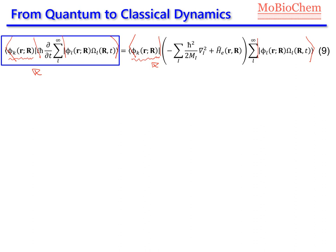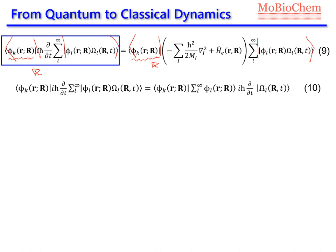Let's analyze the left-hand term in equation 9. We have i multiplied by the Planck constant and then the time derivative of the nuclear wave function, because it is the only function which depends on time. When we apply the brackets, we integrate over the electronic coordinates, so everything which doesn't depend on the electronic coordinates can be placed outside of the integral. This is why we can write this term outside of the electronic integral.